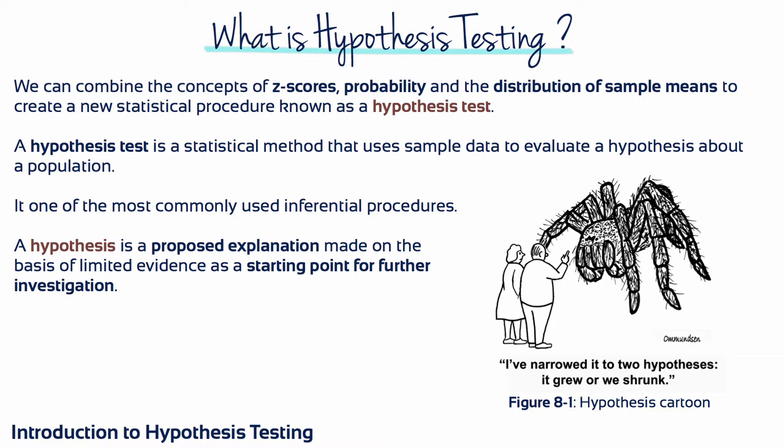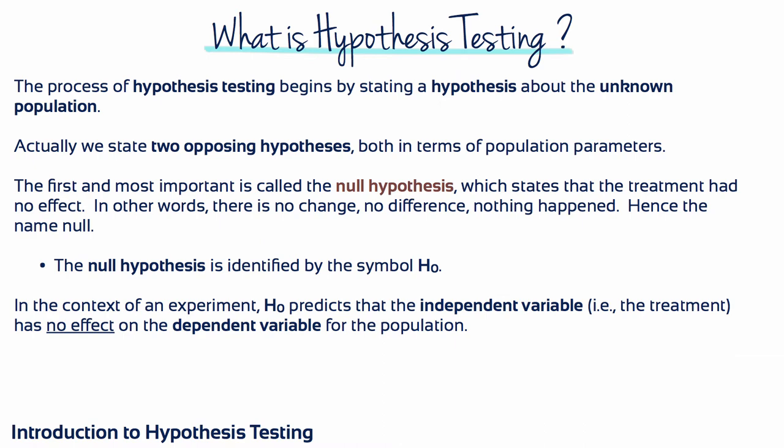A hypothesis is a proposed explanation made on the basis of limited evidence as a starting point for further investigation. The process of hypothesis testing begins by stating a hypothesis about the unknown population. Actually, we state two opposing hypotheses, both in terms of population parameters.